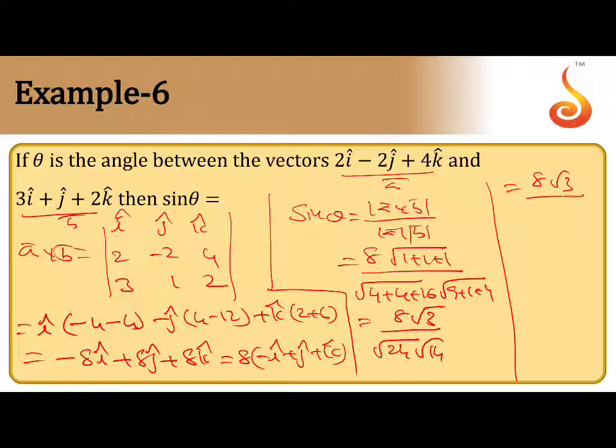8 root 3 by... So you can write this one as root 2 root 12 and root 2 root 7. So that is 8 root 3 by root 2 into root 2, and root 12 is 2 root 3 into root 7.